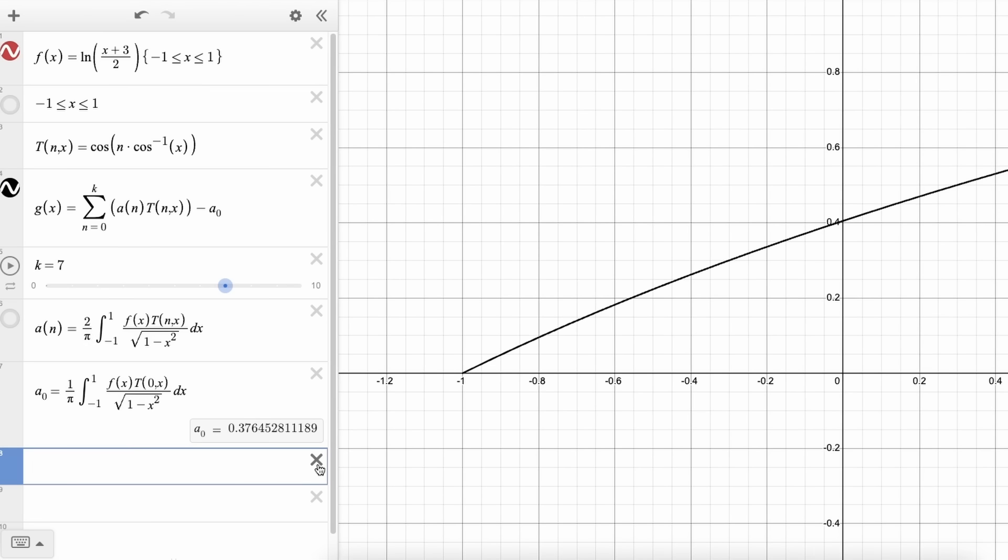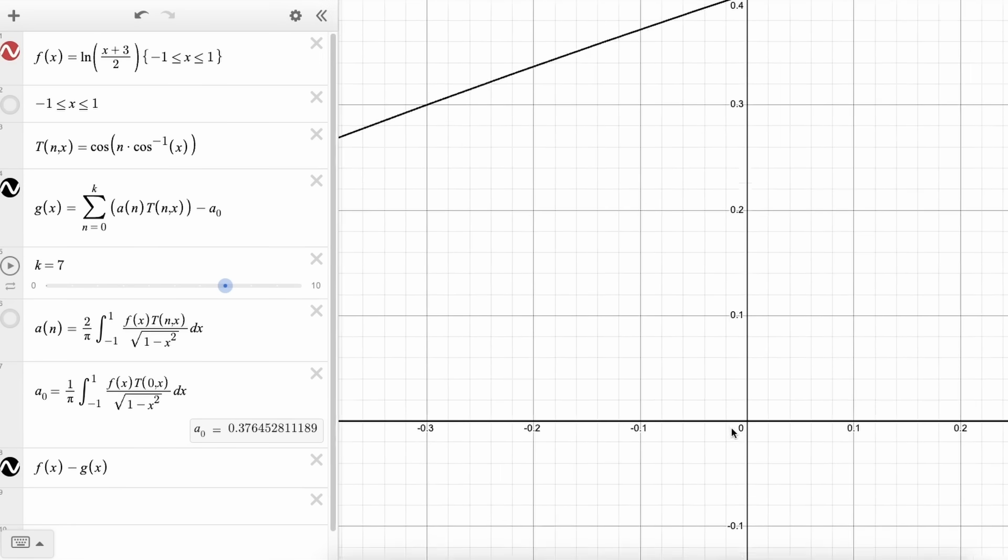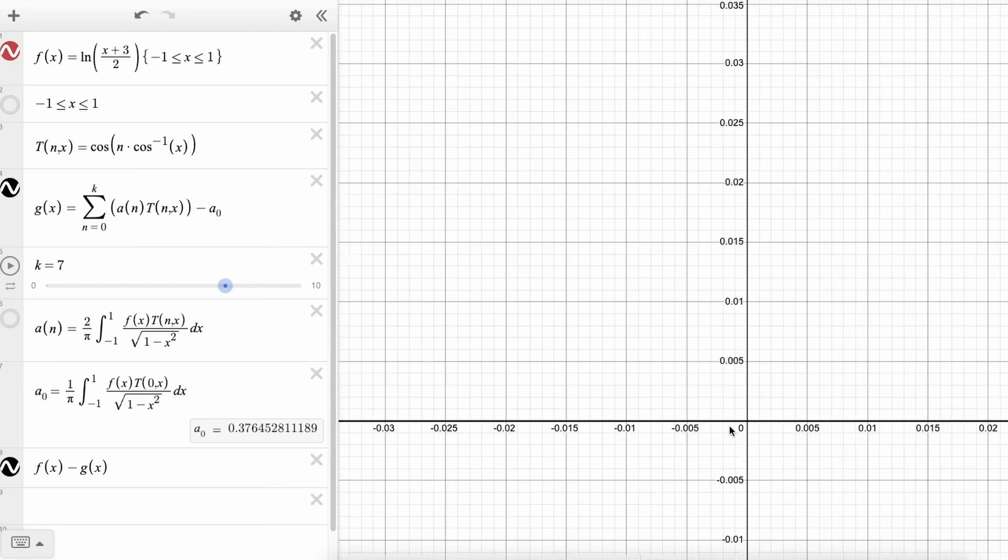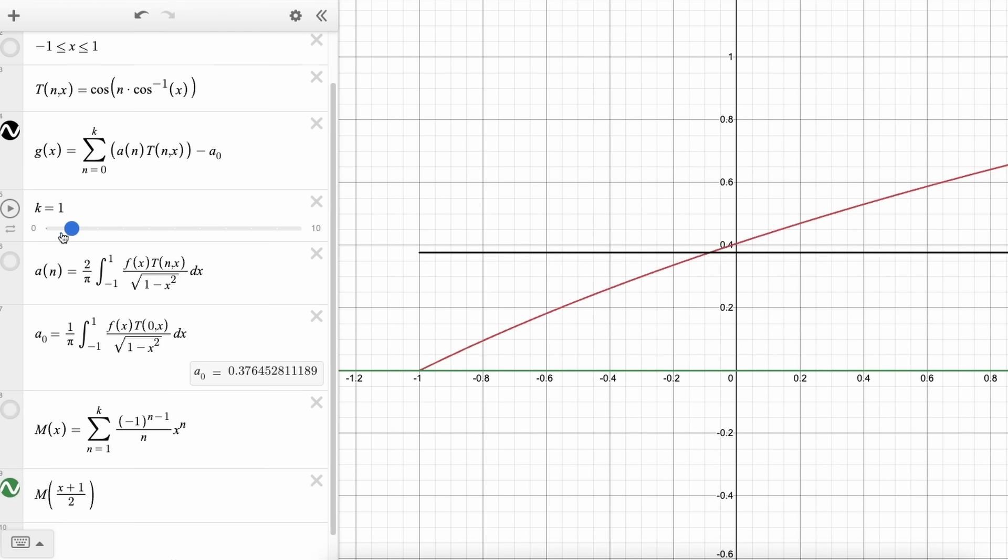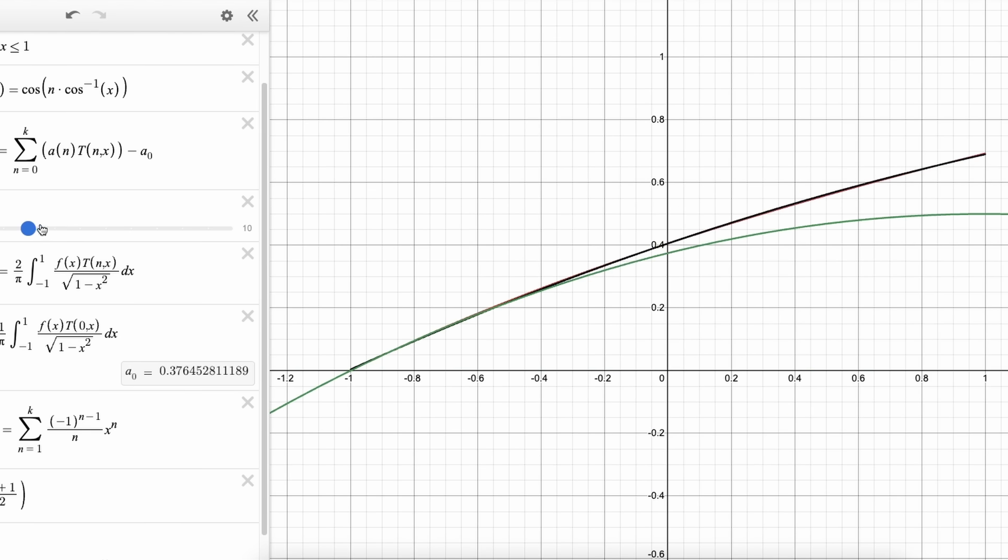The way Chebyshev polynomials work is they minimize the maximum error. This is known as Minimax. And you'll notice that if I show you the error, that the maximum error is extremely small. So small, in fact, that Desmos just plots it as 0. If we compare this to the McLaren expansion seen in green, we can easily see which is the best approximation.